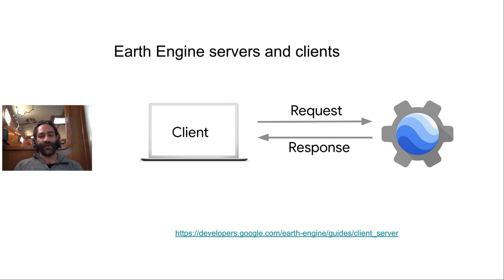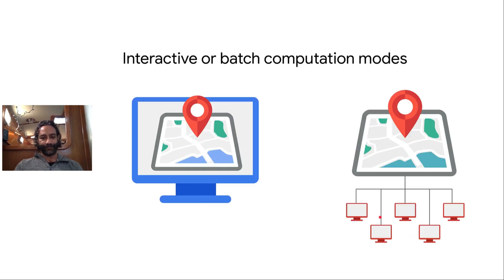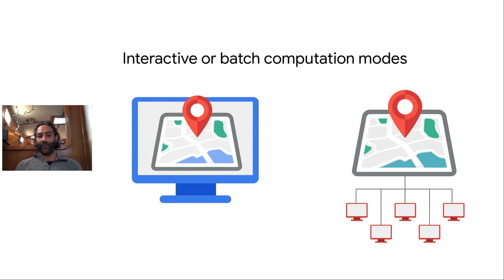The other important thing to note is that EE objects are just handles for something on the server, and therefore you can't mix them with other third-party libraries — for example, EE.Image does not work with Scikit-learn. You need to use Earth Engine methods for Earth Engine objects. There are two computation modes: interactive mode and batch mode. In interactive mode, you're using your own computer and getting results back interactively, but there is a five-minute timeout. So interactive mode is useful for prototyping, and when you want to run it at scale over more data or a larger spatial area, you would do that in batch mode.